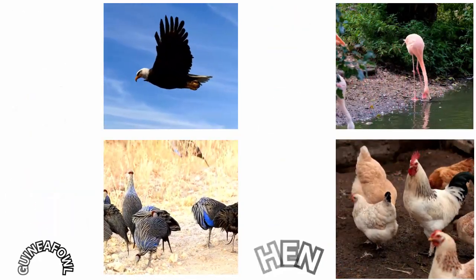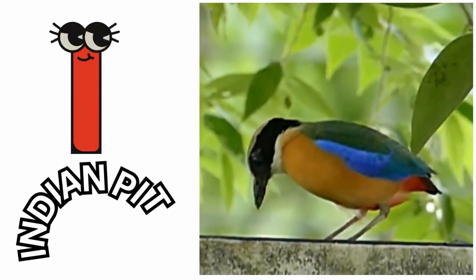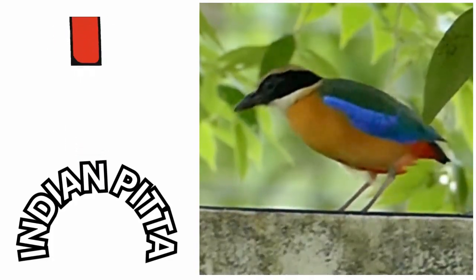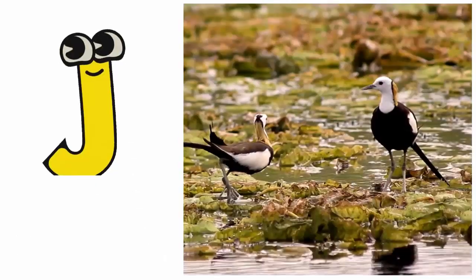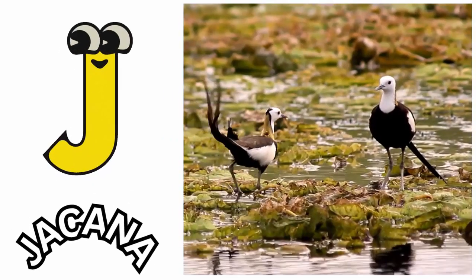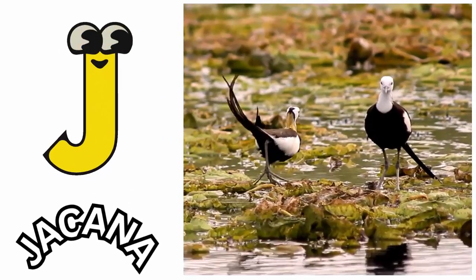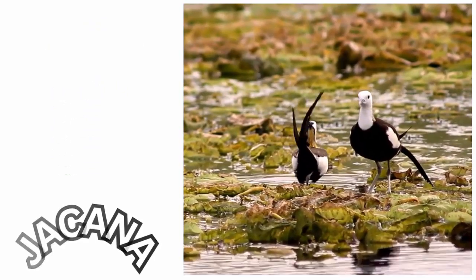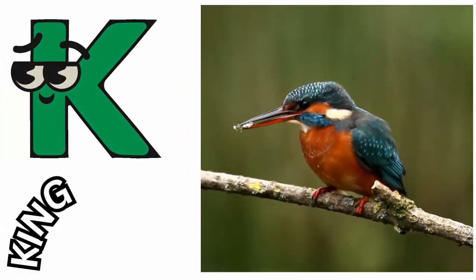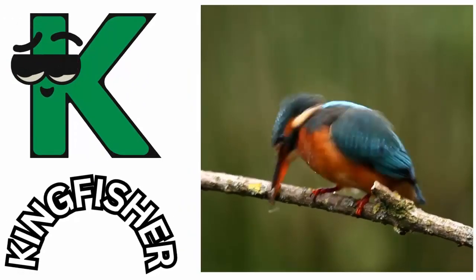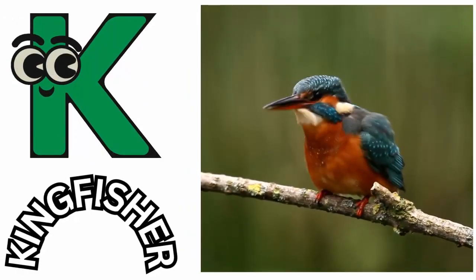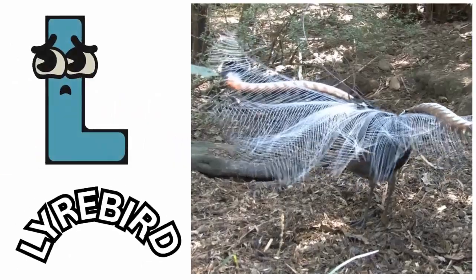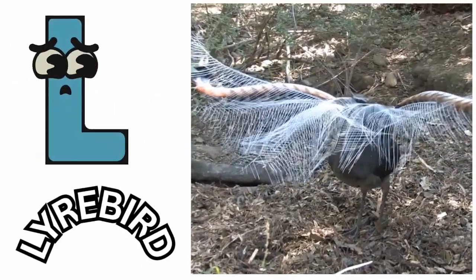I is for Indian Pitta. J is for Jacana. K is for Kingfisher. L is for Lyrebird.